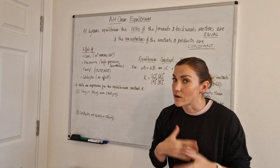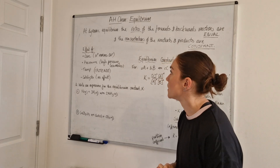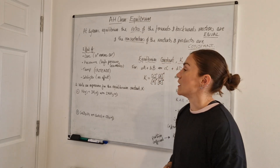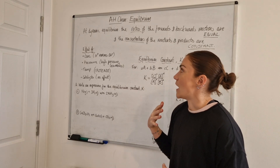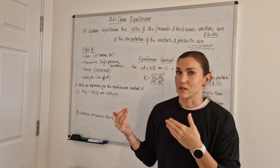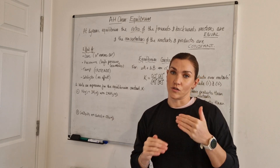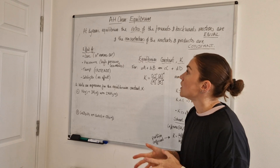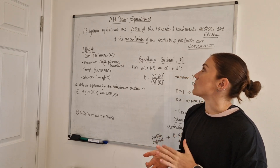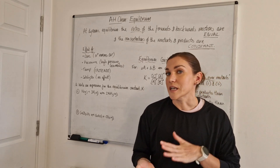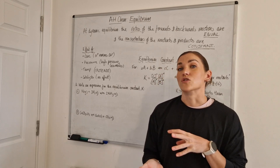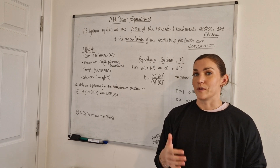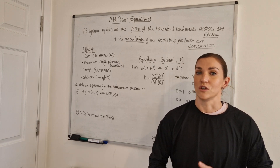We will have a quick run through of it here, but we're not going to go into any depth. So if some of what I'm saying about the higher stuff doesn't make sense, go back and watch that tutorial. Things you need to remember: at dynamic equilibrium — it's called dynamic equilibrium because the reaction is still moving, things aren't static — the rates of the forwards and backwards reactions are equal, and the concentrations of the reactants and products are constant.